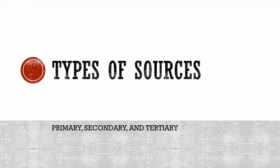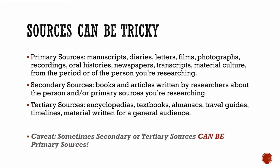So what types of sources are we talking about? This is oftentimes confusing for a lot of people. We talk about primary, secondary, and tertiary sources. What are primary sources? They're basically data — whether it be manuscripts, photographs, oral histories — from the people or the period you're researching.